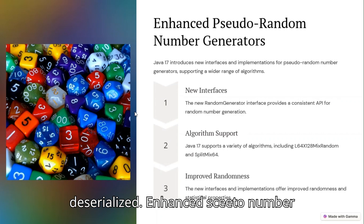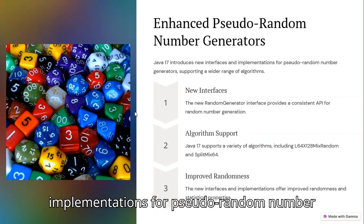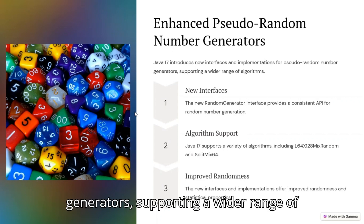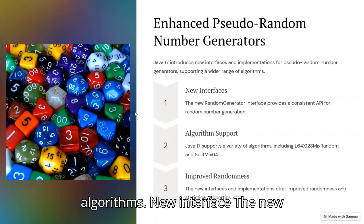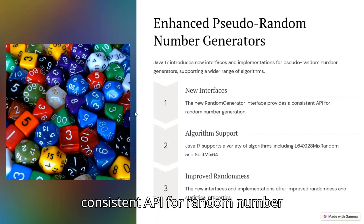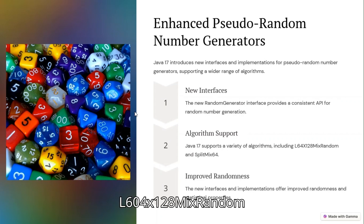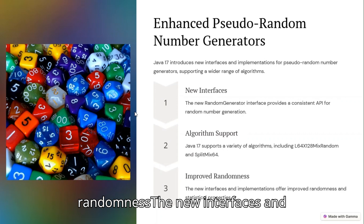Java 17 introduces new interfaces and implementations for pseudo-random number generators, supporting a wider range of algorithms. The new RandomGenerator interface provides a consistent API for random number generation. Java 17 supports a variety of algorithms, including LXM, L64X128MixRandom, and SplittableRandom64. The new interfaces and implementations offer improved randomness and statistical properties.